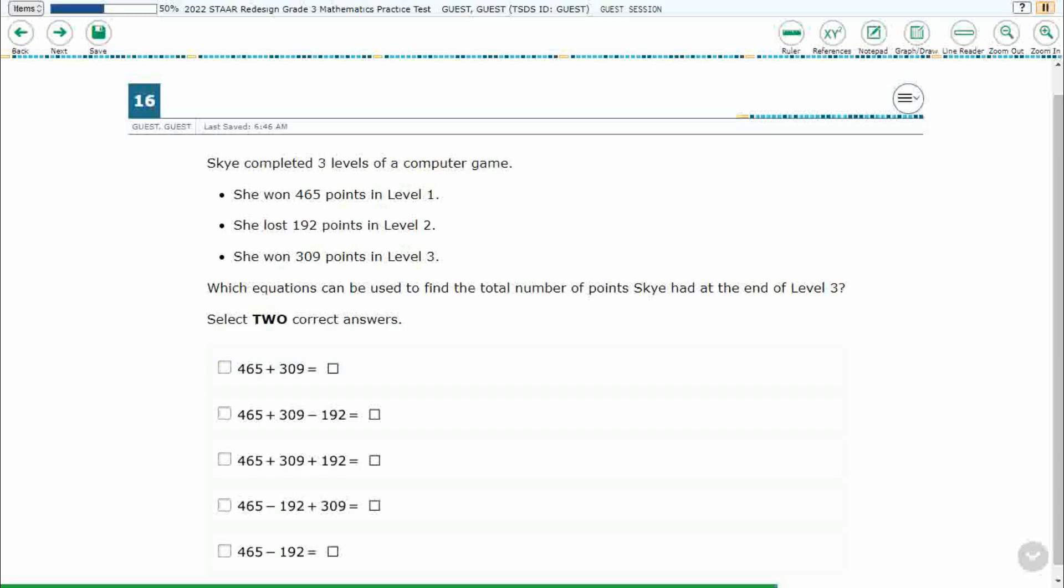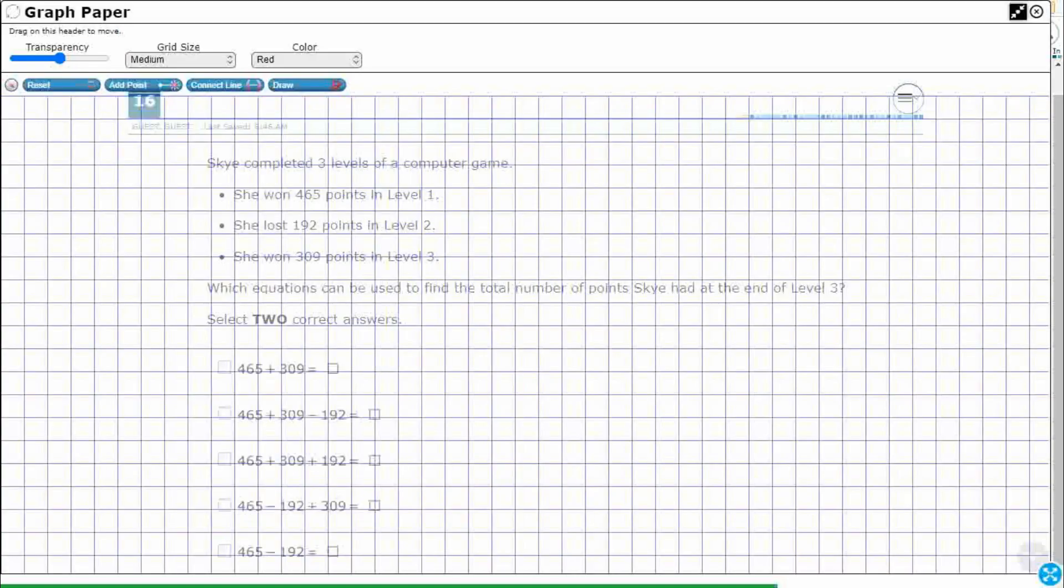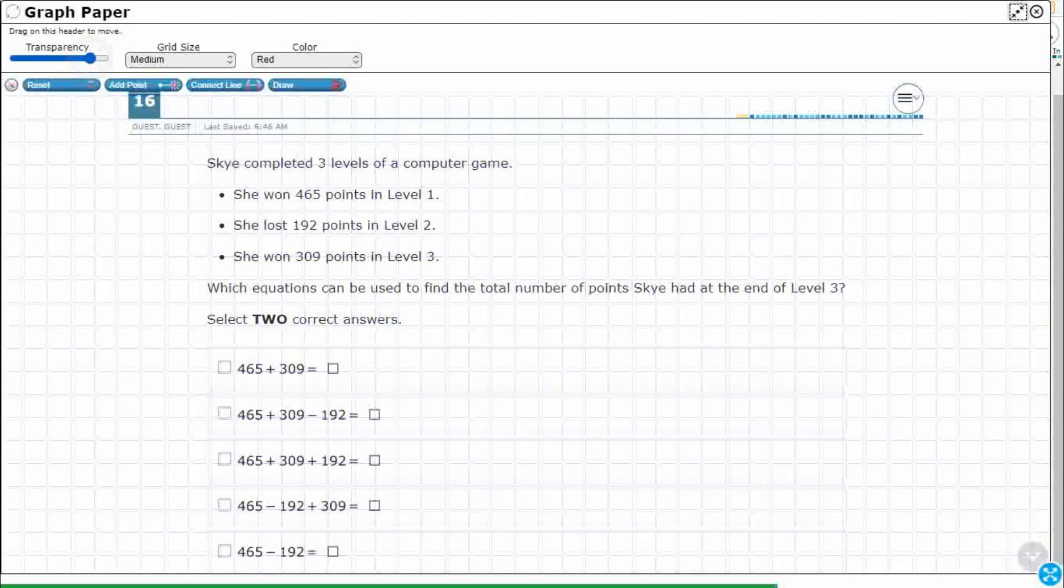So let's open up our graph draw feature, expand it, make it a little bit more transparent so I can see the problem behind there. And we're going to hit this draw feature, so we can draw all over this.